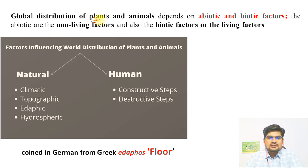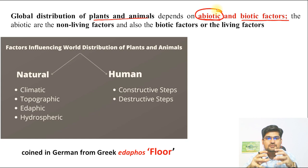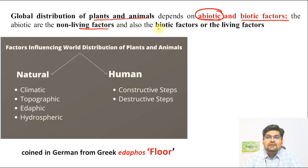The global distribution of flora and fauna depends broadly upon two important factors: abiotic factors and biotic factors. Abiotic means non-living factors, while biotic factors refer to living things. The entire ecosystem has both aspects — living and non-living — and both are equally responsible for the distribution of plants and animals.